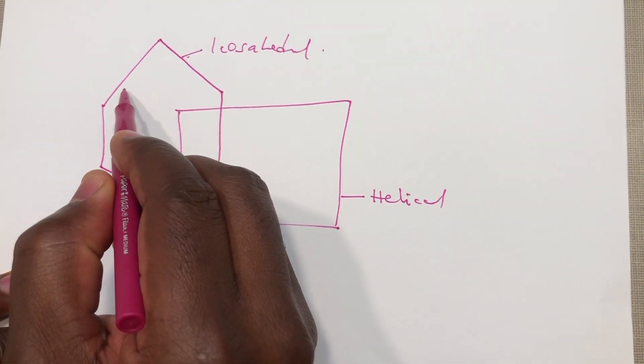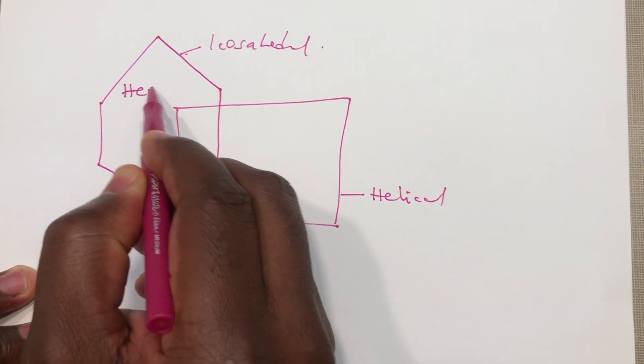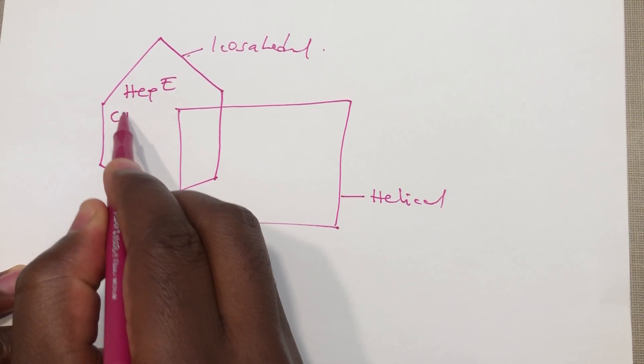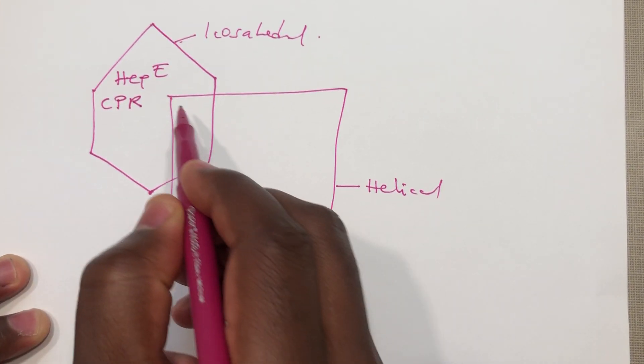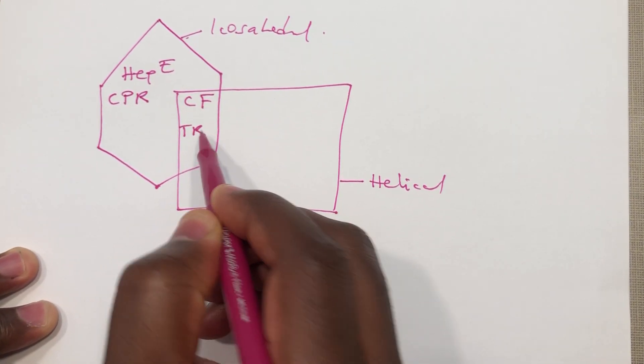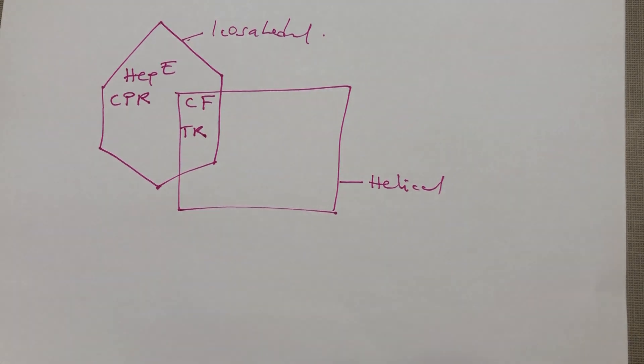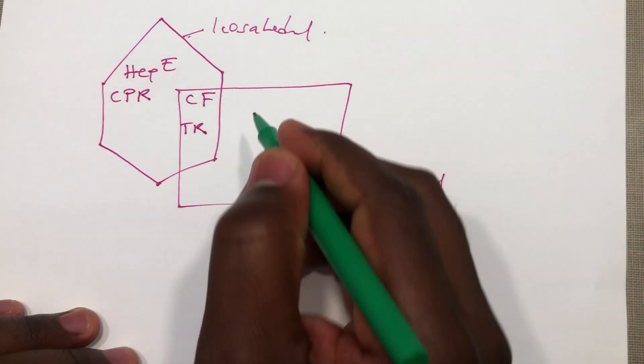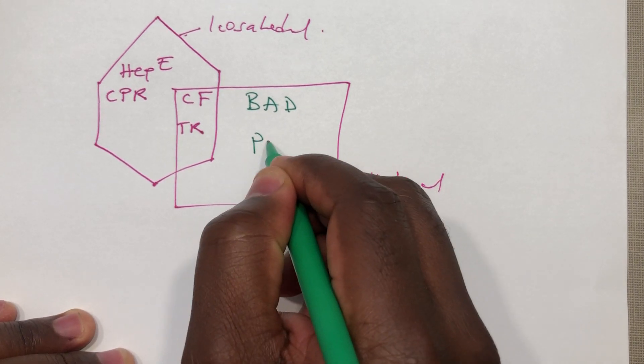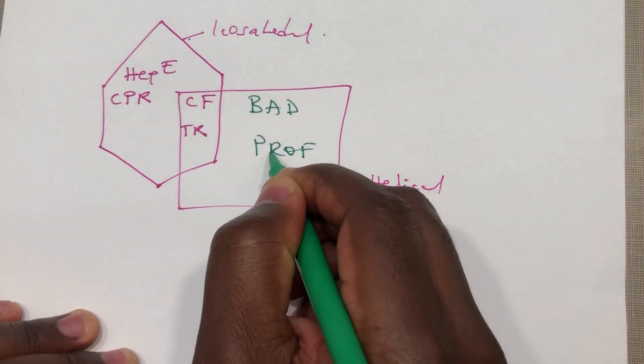In this box I'm going to write all the families of the RNA viruses. I start by saying hep E gives CPR to CFTR and the bad prof. So here we have the bad prof here like that.